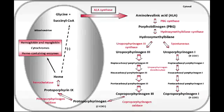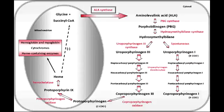What enzyme is defective in porphyria cutanea tarda? In porphyria cutanea tarda, the defective enzyme is uroporphyrinogen decarboxylase. If this enzyme is defective, it leads to a buildup of uroporphyrin, which is excreted in the urine giving it a tea-colored appearance.